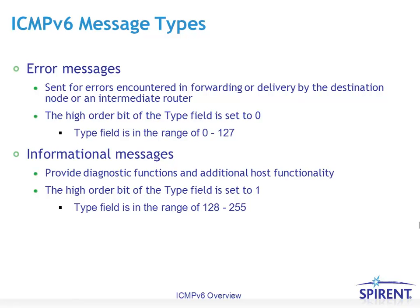The two main message types for ICMPv6 are error messages and informational messages. To distinguish the two, you look at the high order bit of the type field. If it's set to 0, that means it's an error message, so the range — which is a 1-byte field — is 0 to 127. Informational messages have the high order bit set to 1, so the range is 128 to 255.